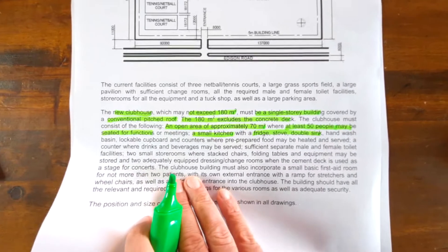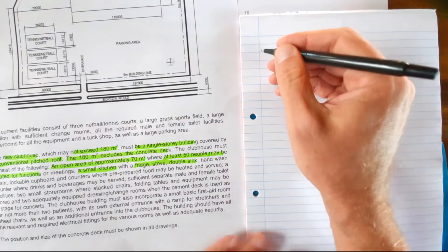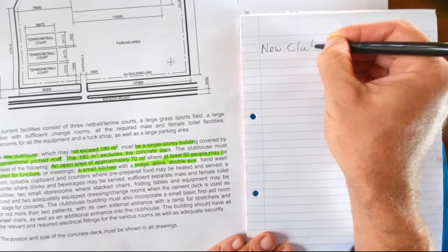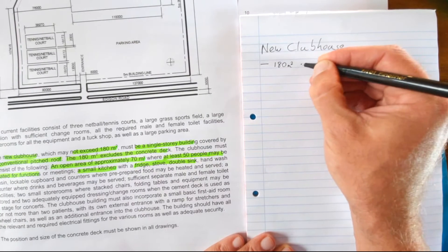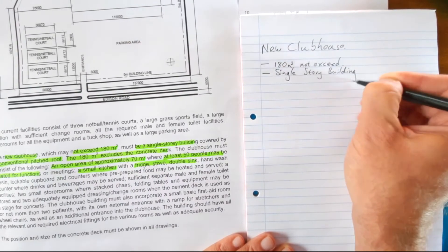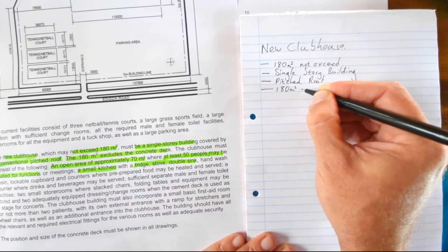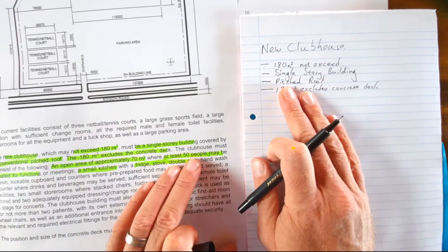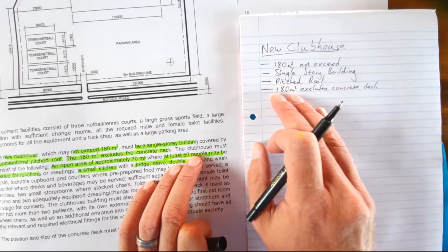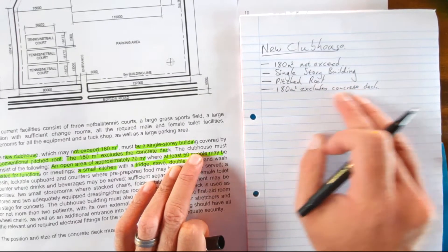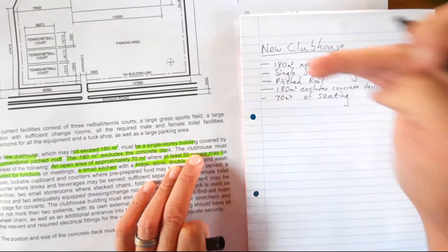My advice for you on how to do this is take a separate page and start yourself off. Have these two pages next to each other, and just as a rough draft, we're going to start here. So we've got the new clubhouse. In the new clubhouse, here's the specifications: may not exceed 180 square meters—second one, third one, fourth one—180 square meters excludes. So here we already have four specifications with regard to the new clubhouse: 180 square meters may not exceed that, single story, pitch roof, 180 square meters excludes the concrete deck. The clubhouse must have 70 square—again it's still under the clubhouse—70 square meters of seating. So in this way you can really go and you can list.